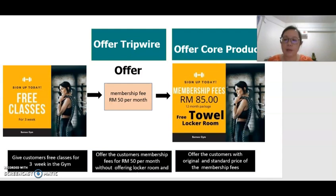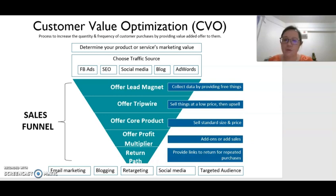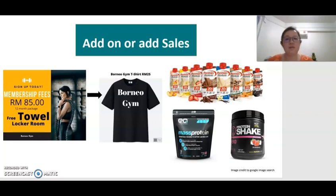After we offer the core product, the customers are now considered our customers. But we are trying to sell more to them — we offer them with a profit multiplier by offering add-ons or upsells, and normally we make more profit from these offers. For example, like McDonald's, they ask you to add on — to upsize the drink and the fries. This is an add-on so that the company can earn more profit.